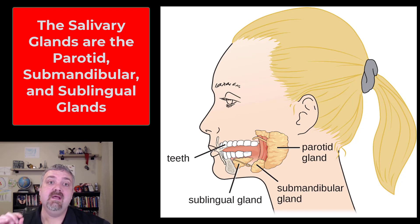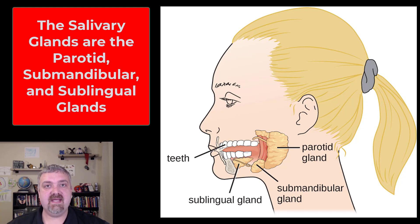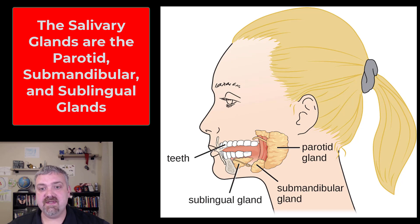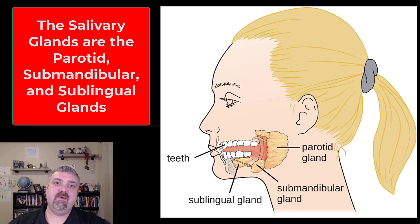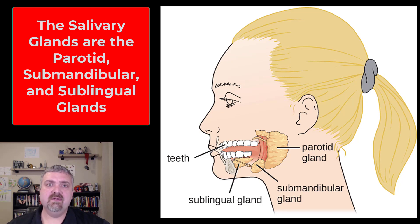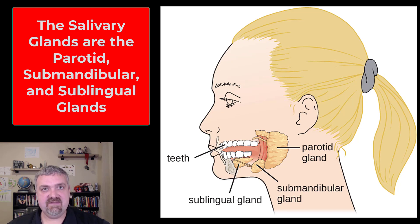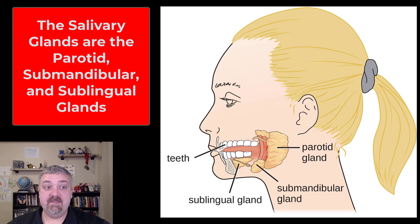We're going to dive in deep here. Just so you understand, there are about 800 to 1,000 other submucosal glands inside your oral cavity — palatal glands, lingual glands on the tongue, and buccal glands in the cheek — so the entire oral cavity is full of glands to keep the mouth lubricated. One important exception: lingual glands secrete lingual lipase, the first digestive enzyme that starts the breakdown of lipids, of fats.